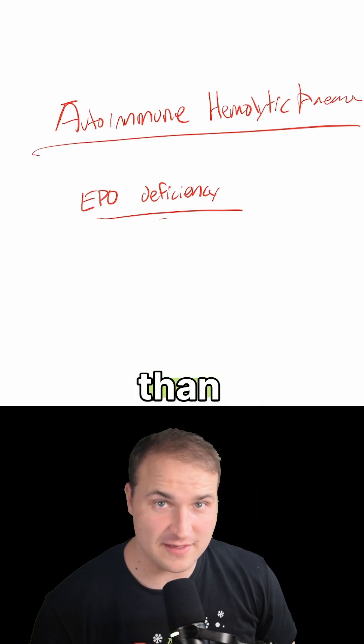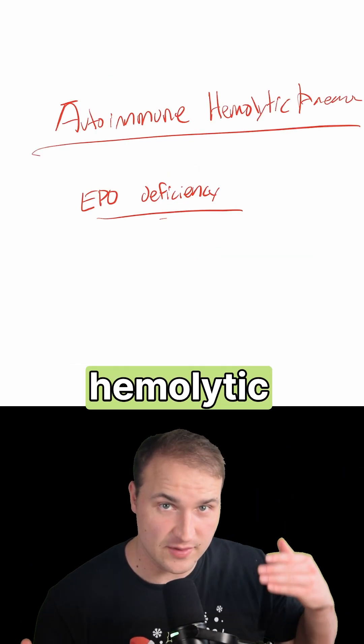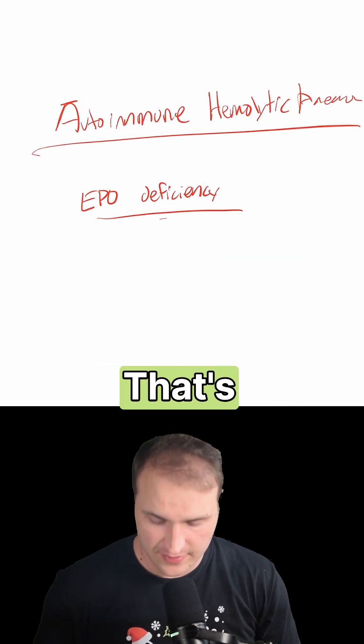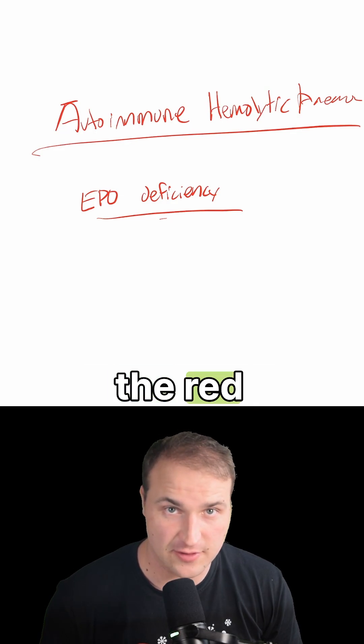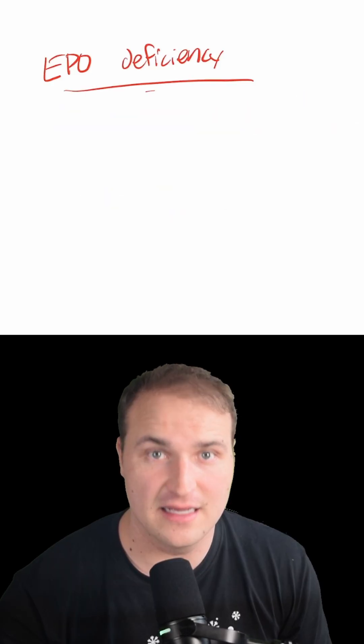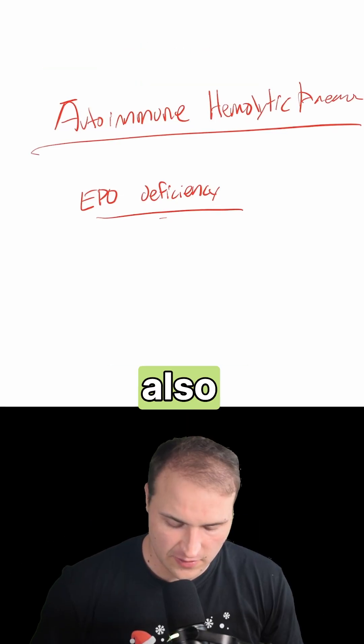This is different from autoimmune hemolytic anemia, where antibodies destroy the red blood cells. You do not see schistocytes there.